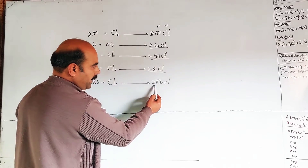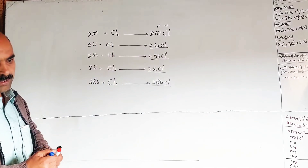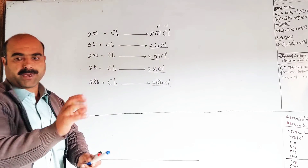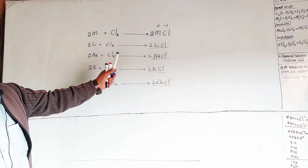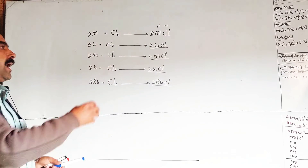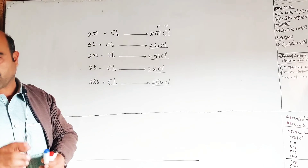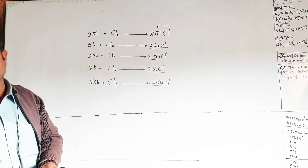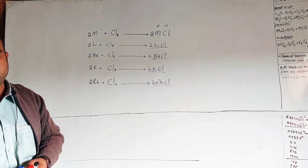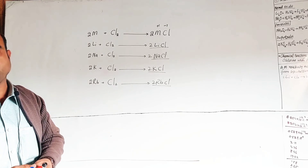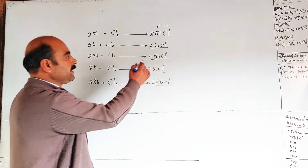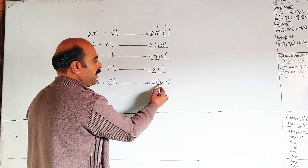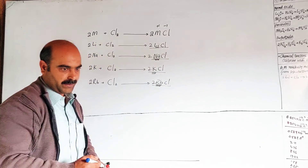Lithium will form lithium chloride, sodium will form sodium chloride, potassium will form potassium chloride, and rubidium will form rubidium chloride. Reactivity increases from top to bottom. All alkali metals can react with chlorine to form binary compounds called chlorides, depending on the metal: lithium chloride, sodium chloride, potassium chloride, and rubidium chloride.